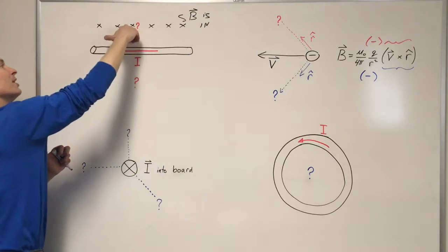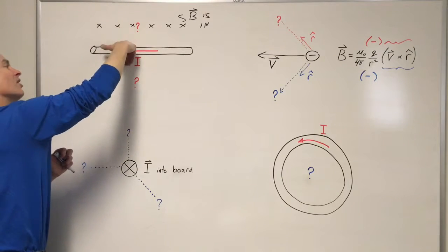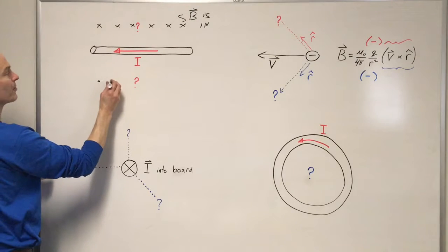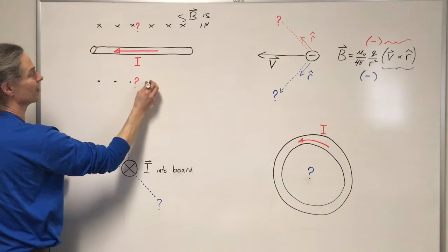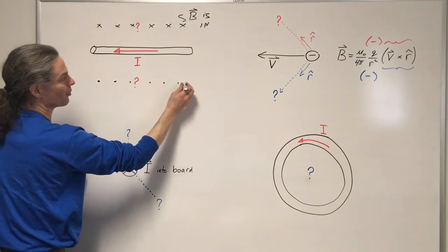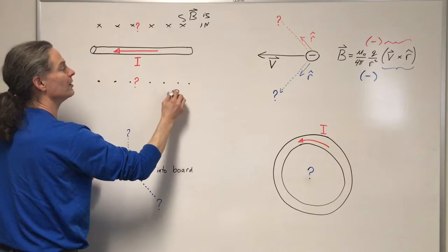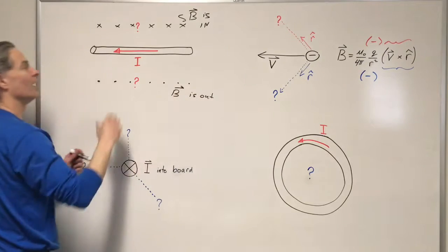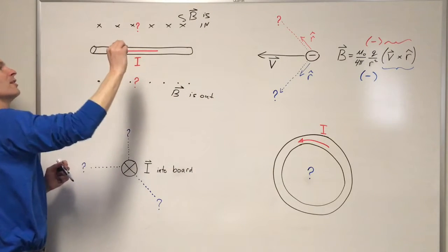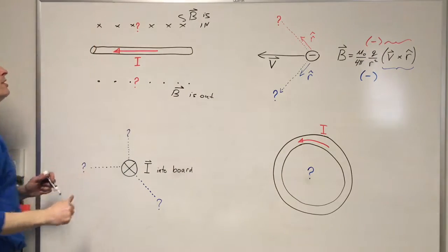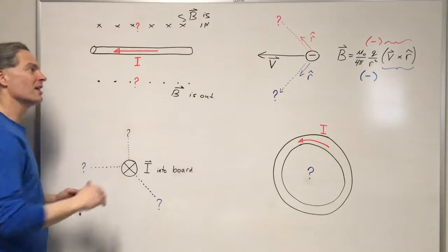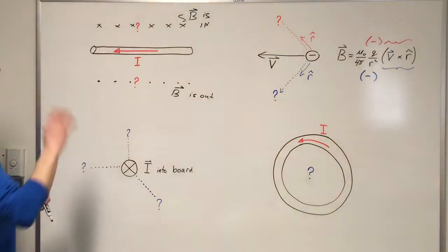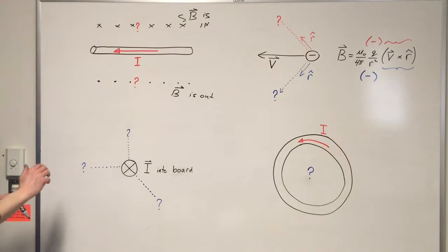Behind the wire, the magnetic field would be down. Below the wire, the magnetic field would be out — I'll represent 'out' with little dots, like we're looking at the tip of the arrow of the magnetic field vector. So B is out. And right here on the other side, the magnetic field would be up. You've got to use your right hand — if you use your left hand, you'll get everything exactly backwards. So that's the first example.